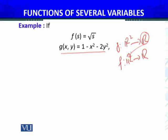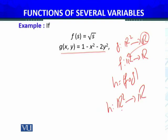If the range of g is some subset of ℝ, which is the domain of f, then we can define h = f ∘ g from ℝ² to ℝ. The domain of h will be that common domain, and the codomain will be ℝ. Now, the function f(s) in question is as follows.